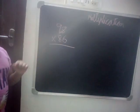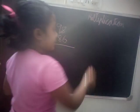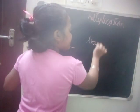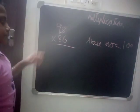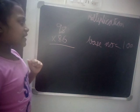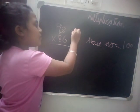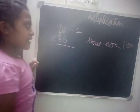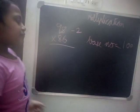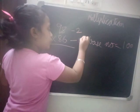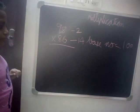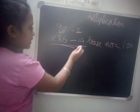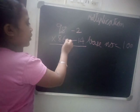In this case our base number is 100. How do we get 98 from 100? We minus 2. How do we get 86 from 100? We minus 14. The next step is to do cross subtraction.